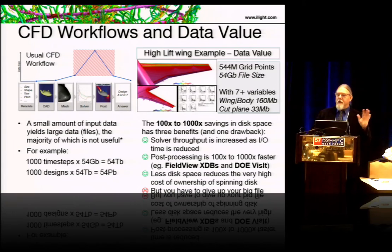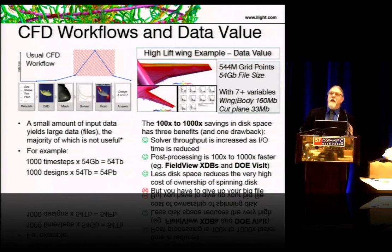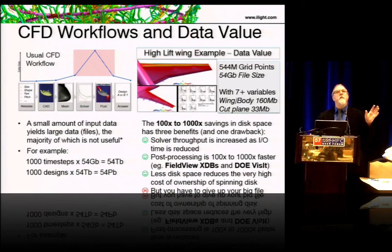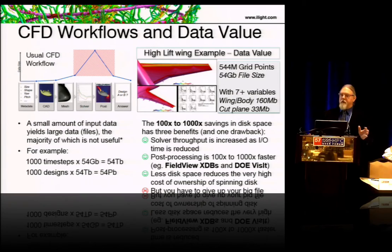If you look at the wing and body with some cut planes and seven flow variables, that's 200 megabytes of data. The difference is a hundred to a thousand times savings if you just save what you need. If you can take that data directly from the memory of the solver without writing all the files to disk, copying somewhere, reading them in, and then getting to the heart of the matter, you have a tremendous workflow savings.